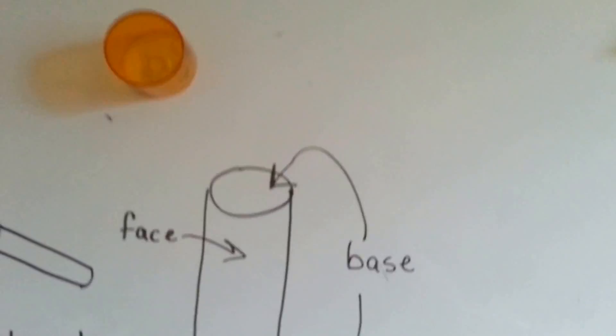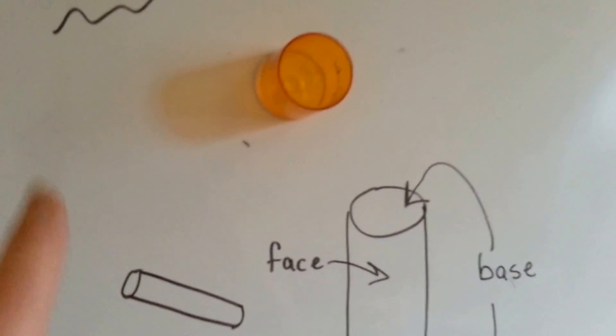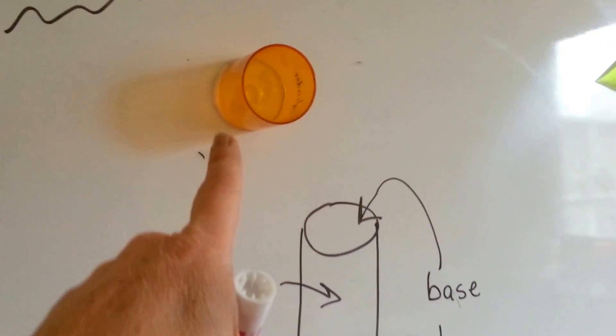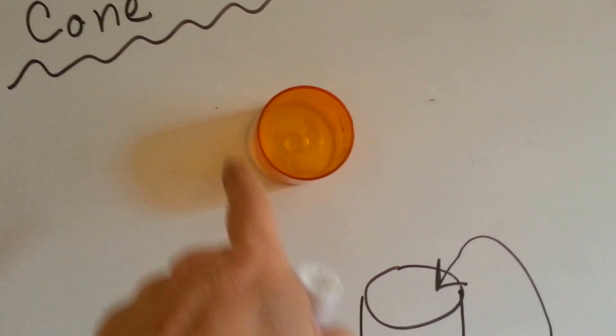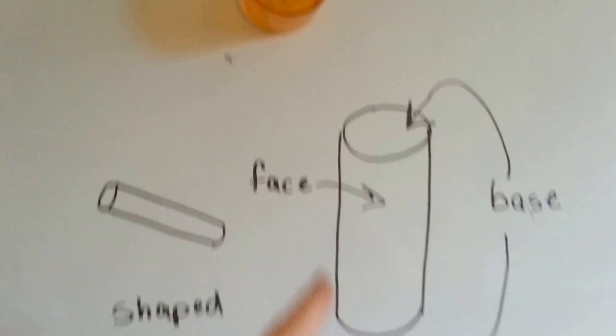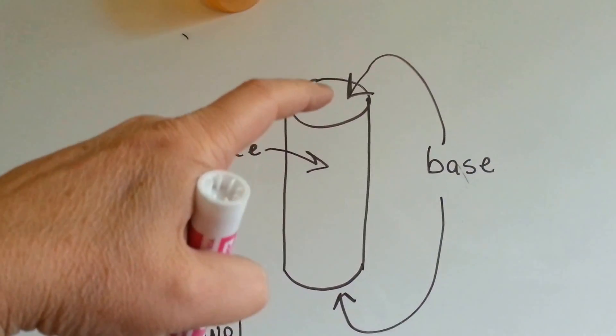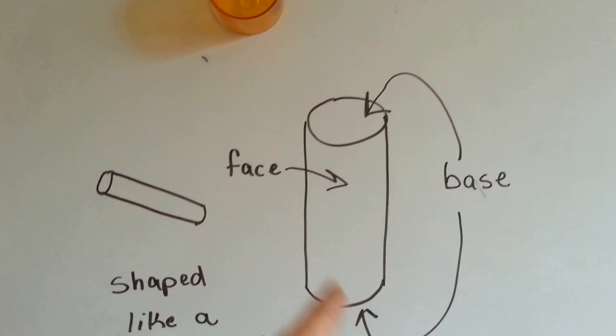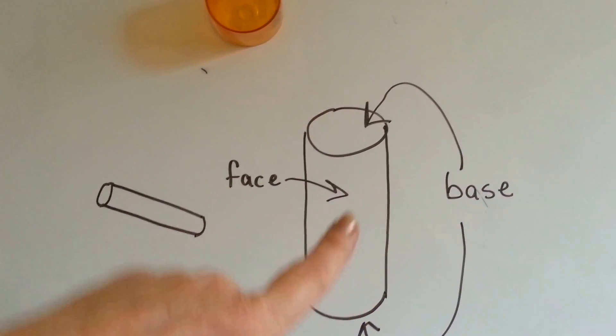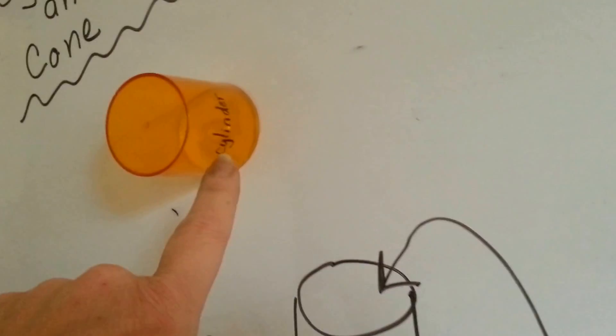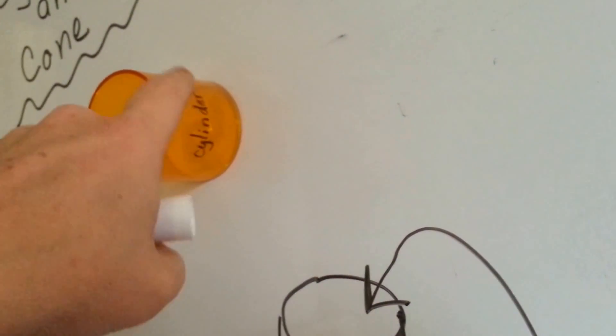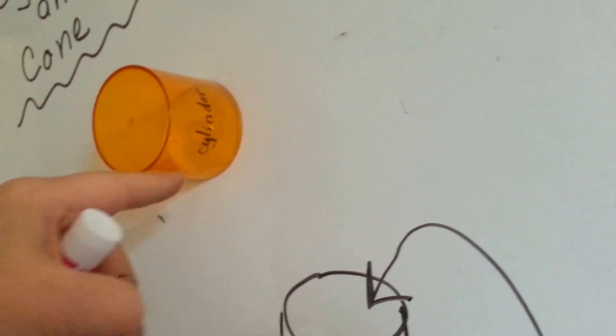The first one I'm going to show you is the cylinder. This is a cylinder. It's round and it's got two bases on the top and on the bottom. And this lateral surface here is called the face. Can you see where I wrote the words cylinder here? That's the face going all the way around.